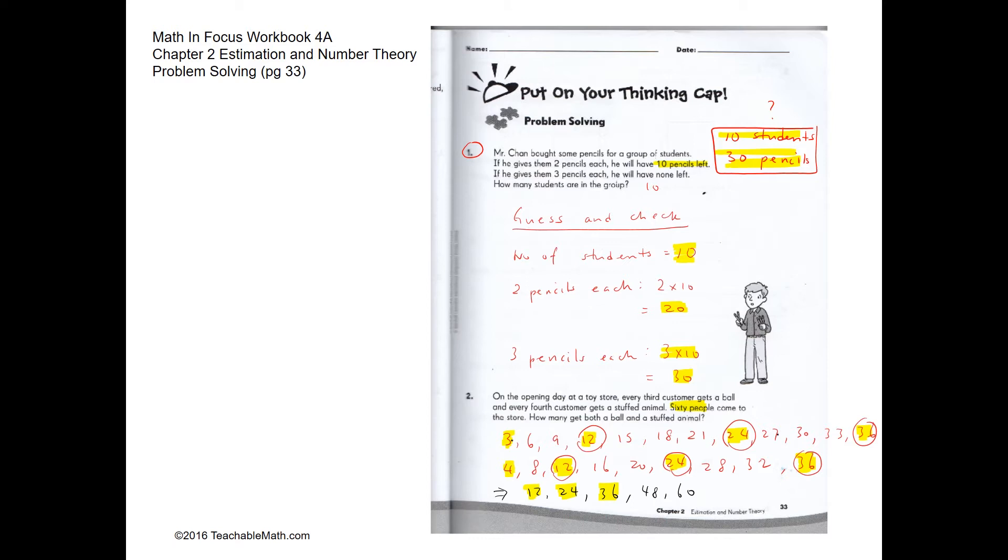If you continue to add 12 more, you'll get 48, and 12 more, you'll get 60. So the answer would be 12, 24, 36, 48, and 60.